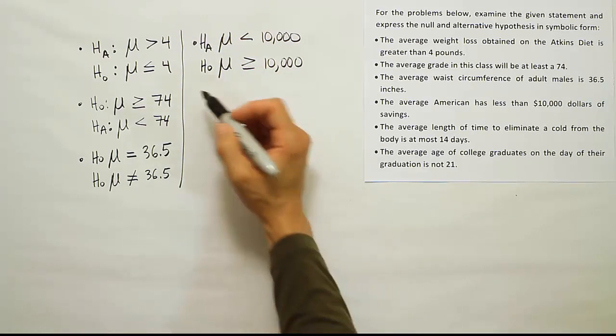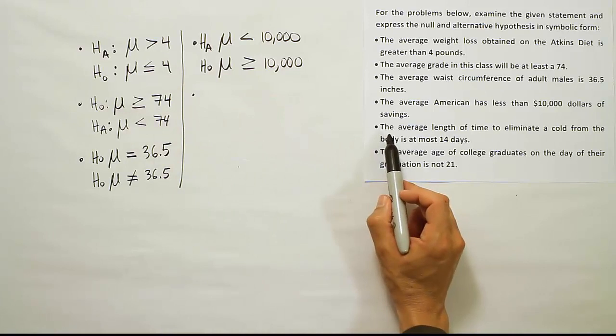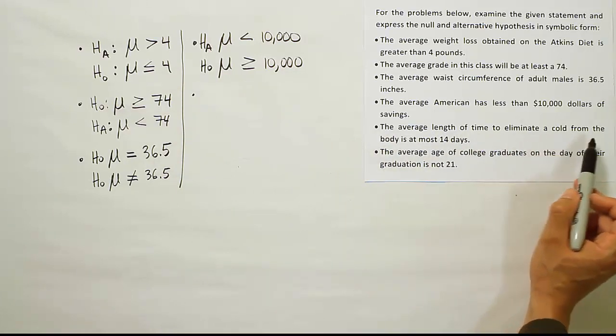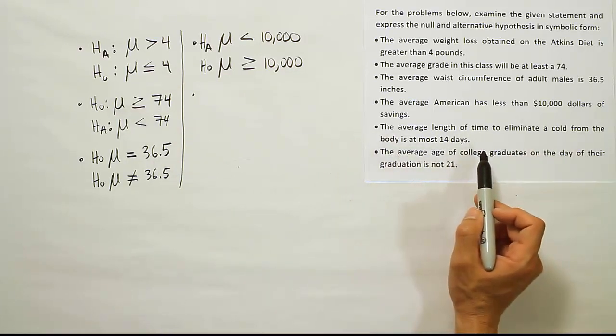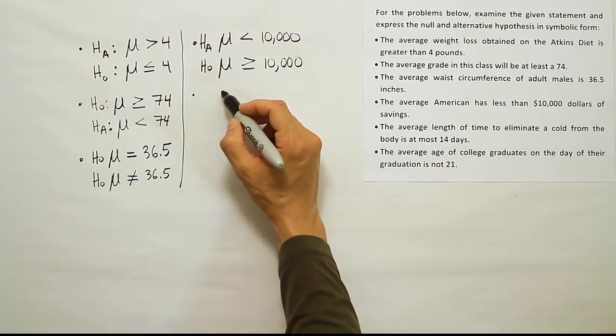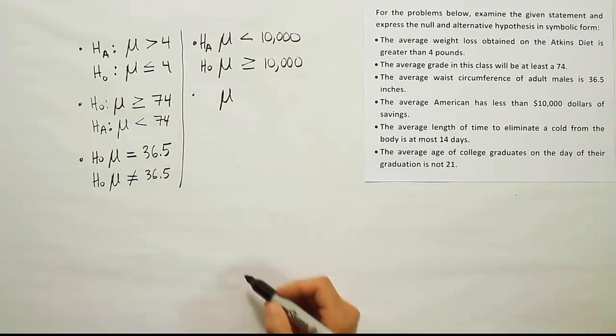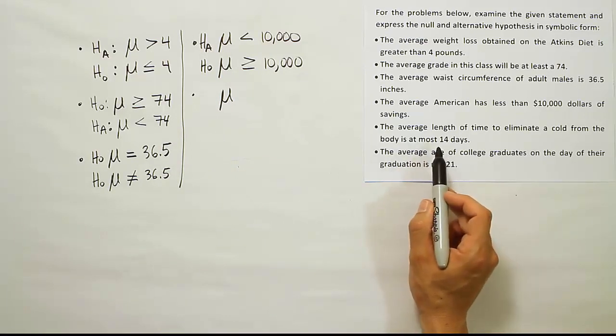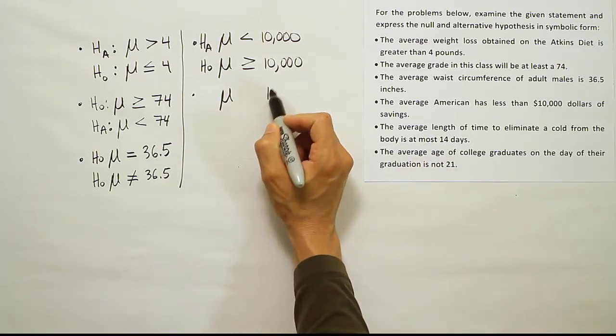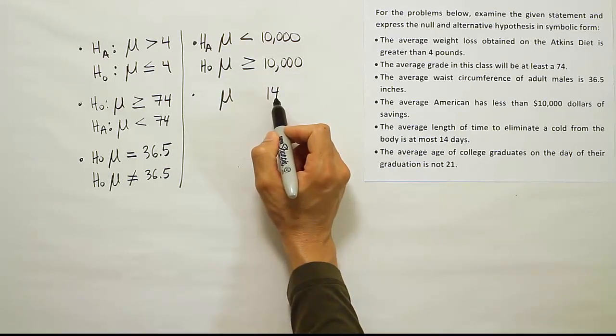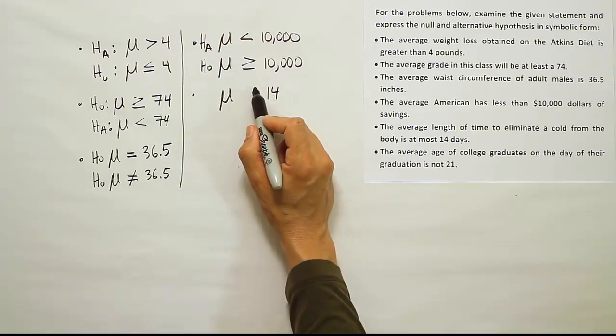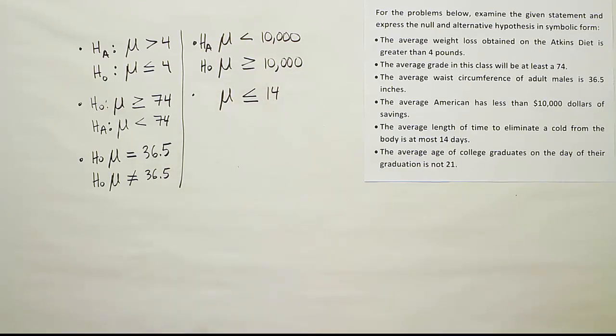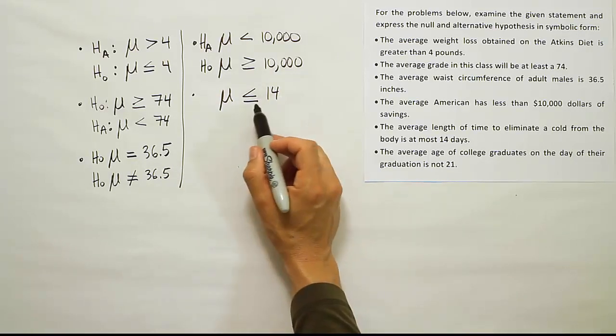From there we have this one: The average length of time to eliminate a cold from the body is at most fourteen days. So the average is at most - well, at most means that it could be no higher than this, this is the maximum time. So that means when you compare the mean and fourteen, this is bigger than the mean or it's equal to it. It could be fourteen but that's the absolute maximum. It's going to generally be less than or equal to it, is what this is saying.